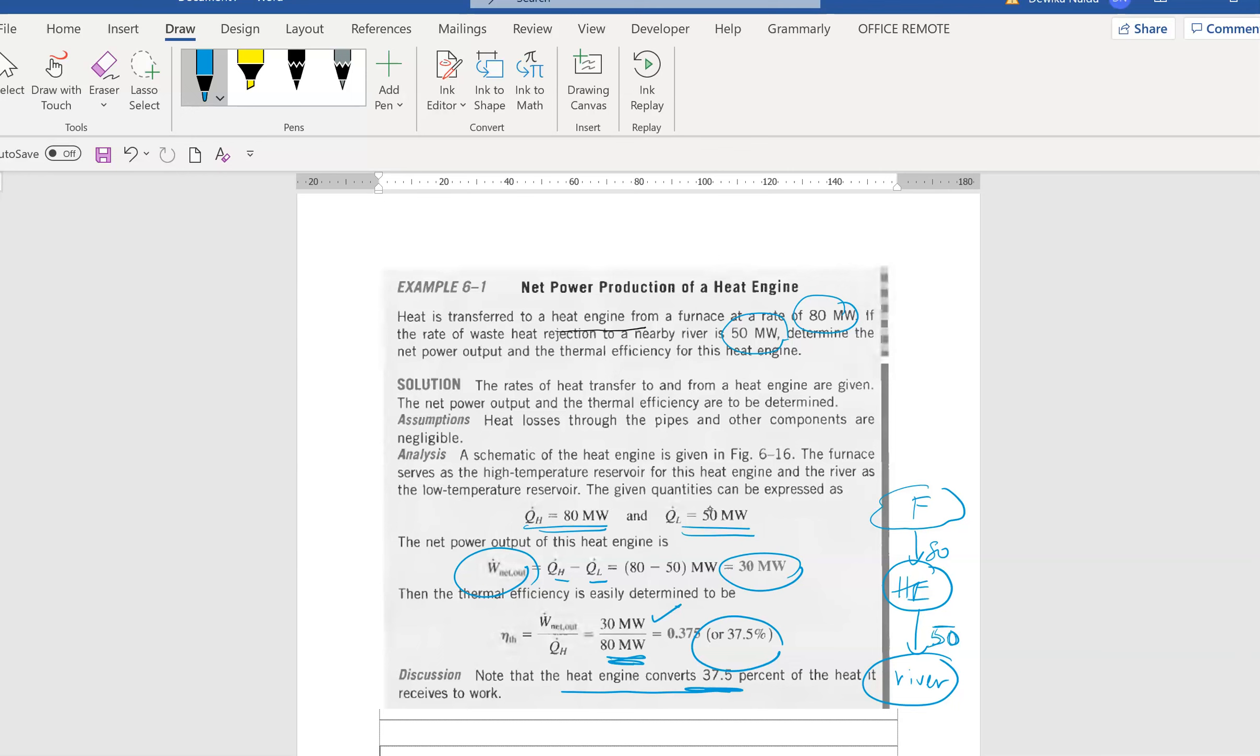The other 50 megawatts is actually wasted to the river. So with these, I've actually entered Chapter 6.1 right up to 6.3. What you need to do is you need to solve the questions that I will be uploading on the link itself. Thank you.